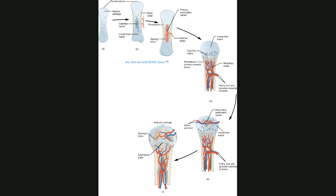The bone tissue built on the outside of the model is called the bone collar. The reason I could build this bone collar is because blood vessels get close to this model and bring with them a special kind of cell — those bone-building cells, the osteoblasts. Blood vessels bring osteoblasts, and those osteoblasts build really immature bone, a thin layer of bone on the outside of the model. That's called the bone collar.